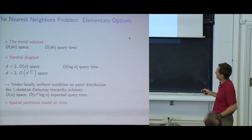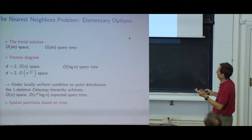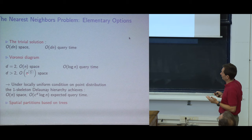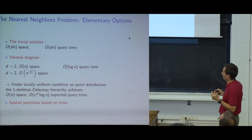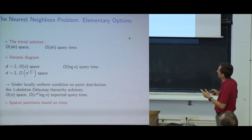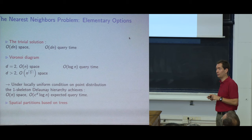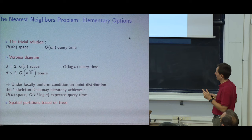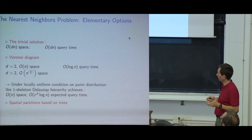Some trivial solutions: storing points linearly gives O(nd) storage and O(nd) search by full scan — no speedup. Voronoi diagrams are optimal in 2D (linear space, log n queries), but in dimension three or more the spatial requirements grow: point sets can have Delaunay triangulations of quadratic size, which is prohibitive for large point clouds. So Voronoi diagrams don't really help here.